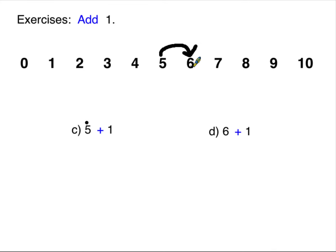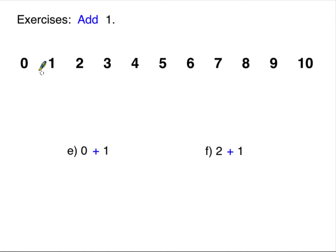Starting at the six, what's one more than six? Seven. So if you can count, you can do five plus one or six plus one. One more than zero — start at the zero and that's one. Two plus one, one more: one, two, three.